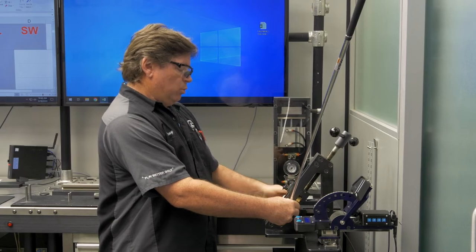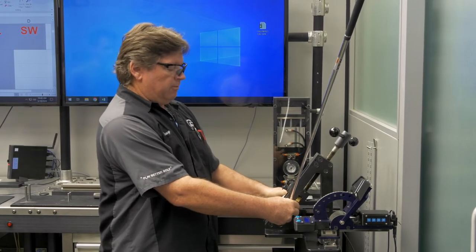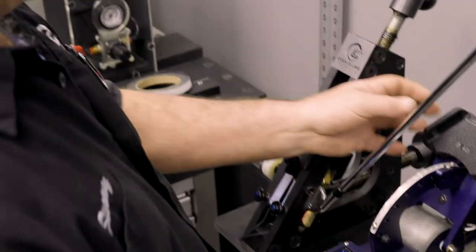Hi, guys. I'm going to show you how to use our loft and lie machine here at Cool Clubs. Loft and lie is very important because it initiates where the ball flight is going to start. When measuring a club, make sure the shaft is in the carriage correctly and firmly.